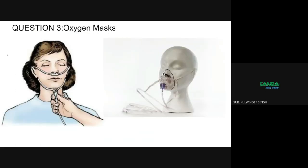Nasal cannulas and oxygen masks are devices that enable the flow of oxygen from the concentrator to the patient. Nasal cannulas are flexible tubes placed under the nose with two prongs that go inside the nostrils and smaller tubing that hooks around the ears. Oxygen masks cover the mouth and nose and are held in place using an elastic band that wraps around the back of the head.